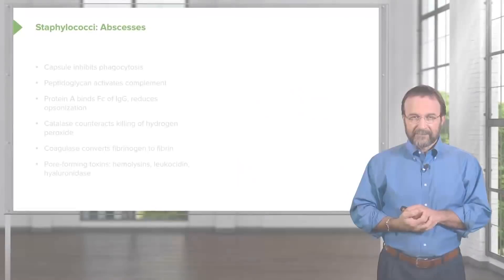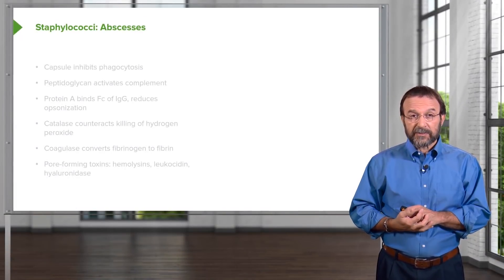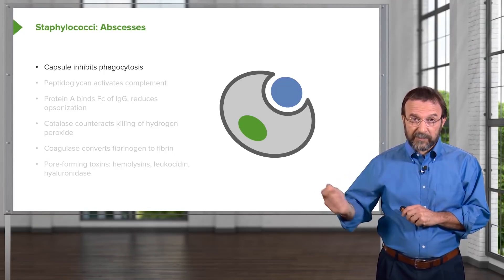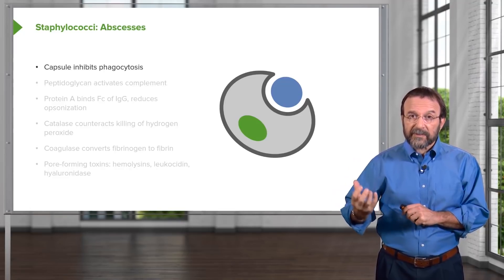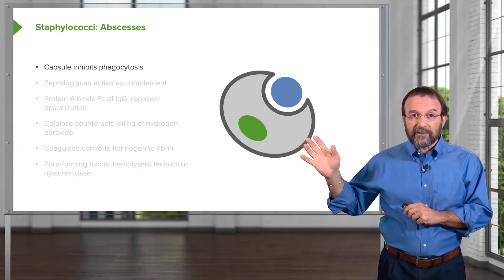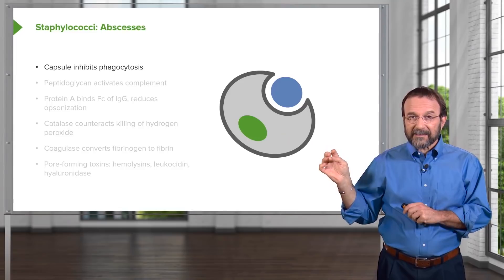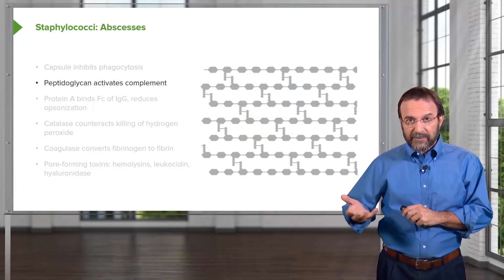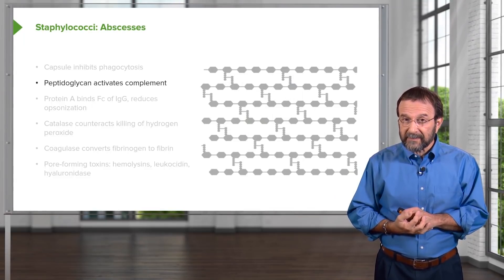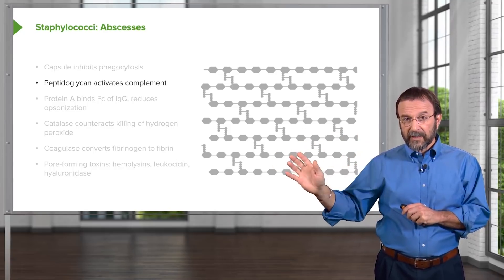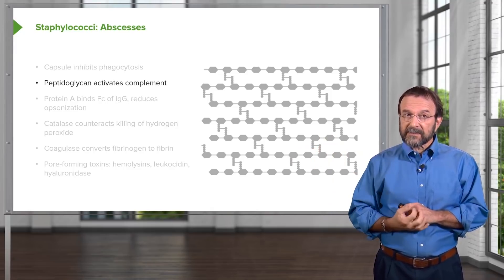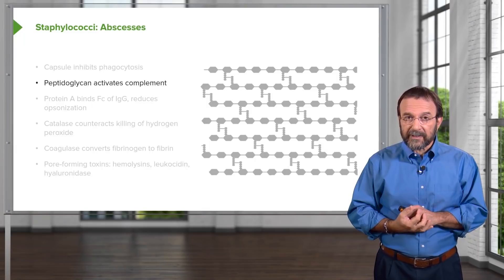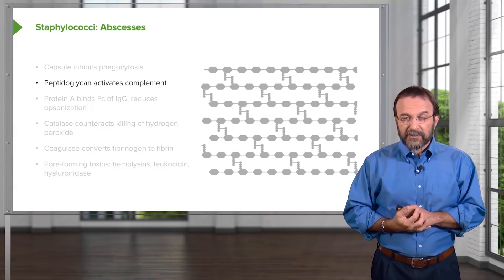Staphylococci are gram-positive bacteria with a thick outer wall of peptidoglycan, surrounded by a capsule. The capsule is important for inhibiting phagocytosis — in this picture, a macrophage is trying to take up the staphylococcus, and the capsule will resist that reaction, preventing the bacteria from being destroyed inside the cell. The peptidoglycan consists of alternating chains of carbohydrates cross-linked with short peptides, and it activates complement, a host defense against infection.